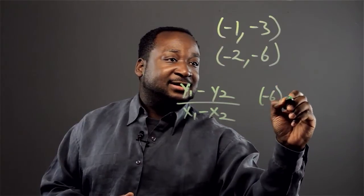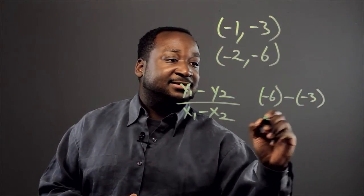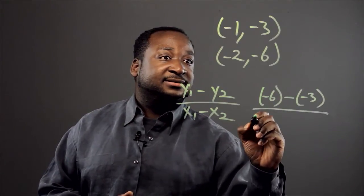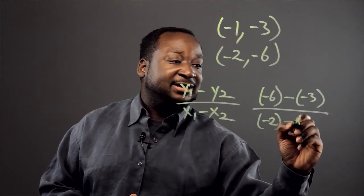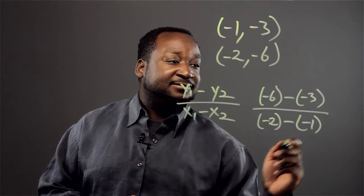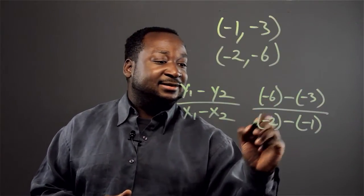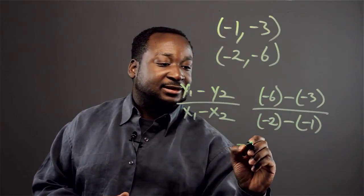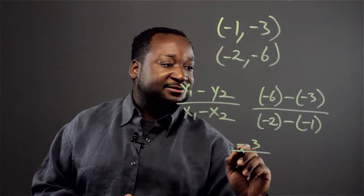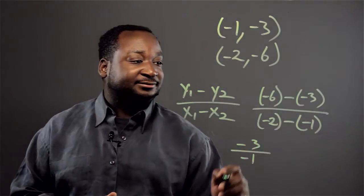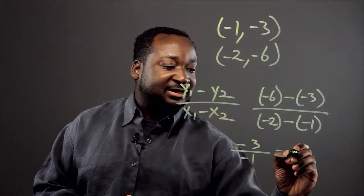Negative 6 minus negative 3 over negative 2 minus negative 1. And when we solve this, we get negative 3 over negative 1, which is equivalent to 3.